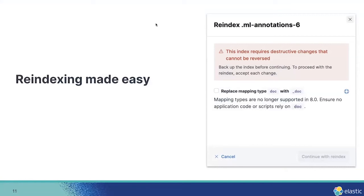Fortunately, Upgrade Assistant can do all that work for you. Let's say you clicked on a deprecation issue that requires a re-index to resolve it — you'll see a panel like this. This panel shows you all the different changes that will be made to your data when it re-indexes. It requires you to acknowledge those changes by checking the checkbox next to each one. We do this because we want to make sure the re-index process doesn't make any changes you're not comfortable with. Once you've acknowledged all those changes and click the Continue with Re-index button, Upgrade Assistant will kick off the re-index process, show you its progress, and show you a notification when it's done.